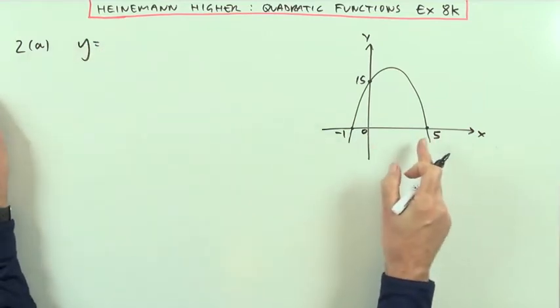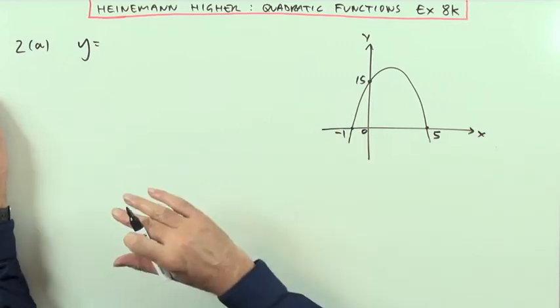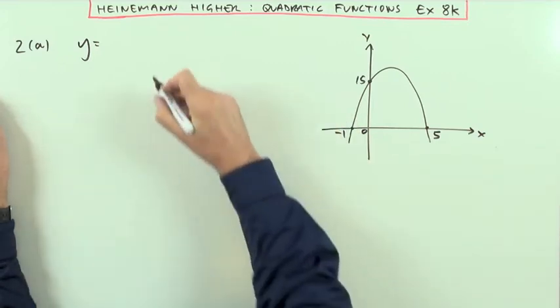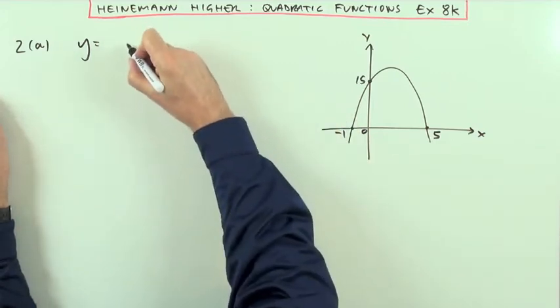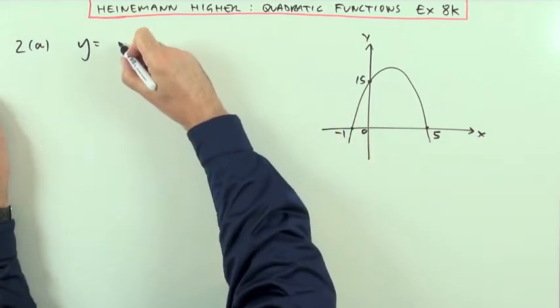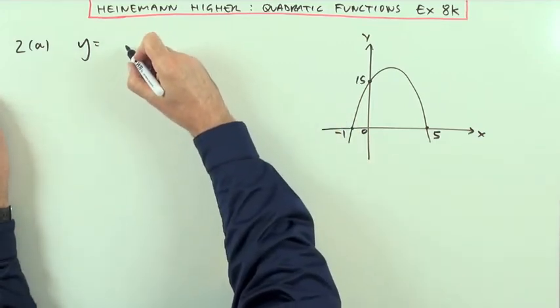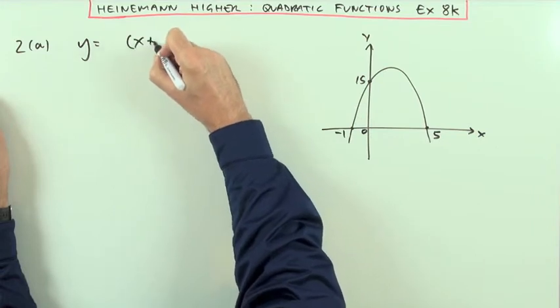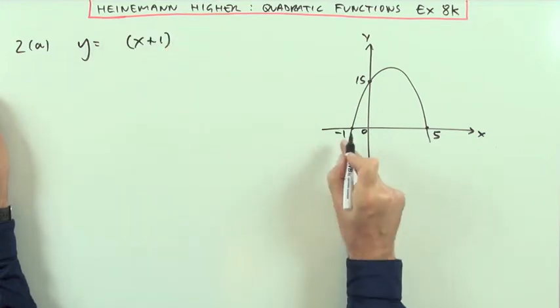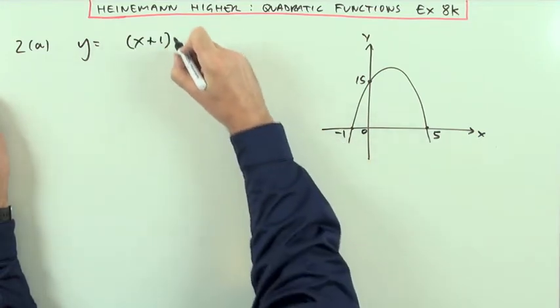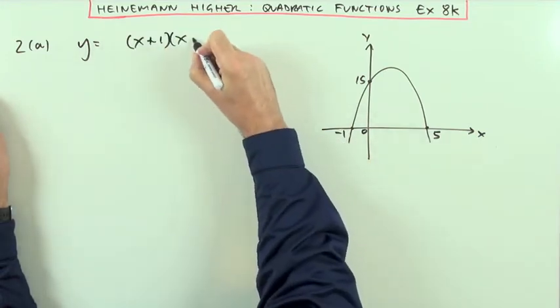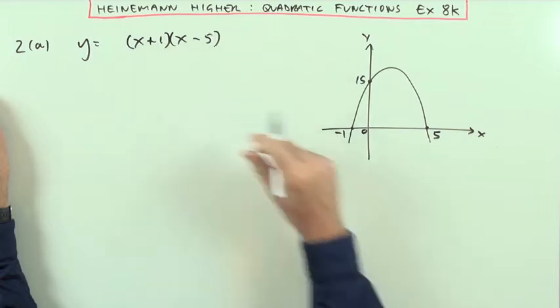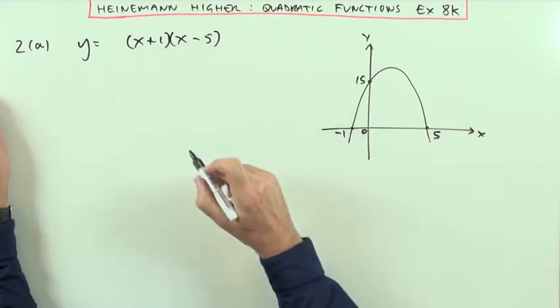I can see the zeros, so I can reconstruct its factors. I'll put it in the factors-of-the-roots form. So one of them must be X plus 1 to generate a negative 1, and one of them must be X minus 5 to generate a 5.